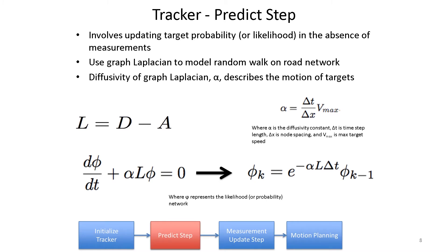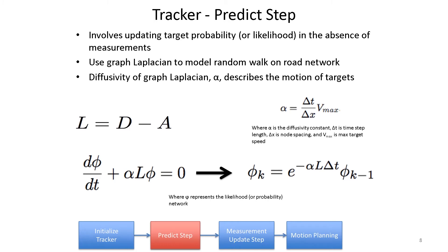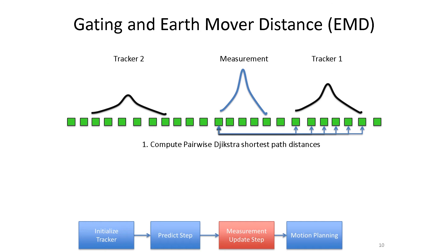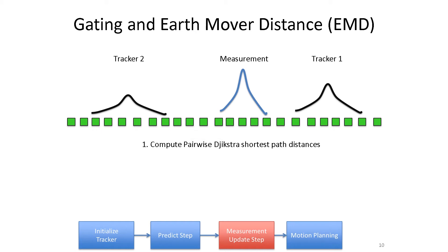When the target is constrained to the road network, we can say something about where it will be in the future based on where it was in the past. The question then is: which measurement should go to which tracker once we've detected multiple targets? To deal with this, we use what's known as earth mover distance to compare each measurement to each tracker and determine which measurement should be used to update each tracker. You can see there are different distributions for each tracker and a particular measurement distribution.